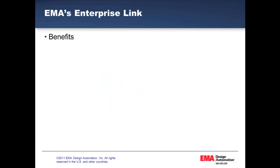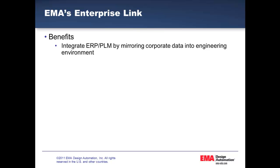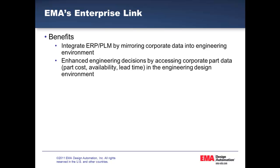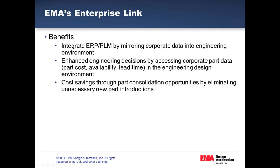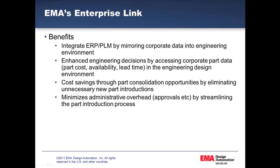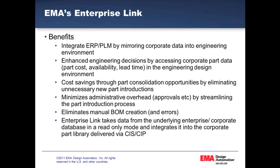With EnterpriseLink, many benefits are available, like integrating ERP and PLM systems by mirroring corporate data into the engineering environment. Enhanced engineering decisions are supported by accessing corporate part data like part cost, availability, and lead time in the engineering design environment. Cost savings come through part consolidation opportunities by eliminating unnecessary new part introductions and minimizing administrative overhead, like approvals, by streamlining the part introduction process. We can also eliminate manual BOM creations and errors. EnterpriseLink takes data from the underlying enterprise database in a read-only mode and integrates it into the corporate part library delivered via the CIS and CIP solution.